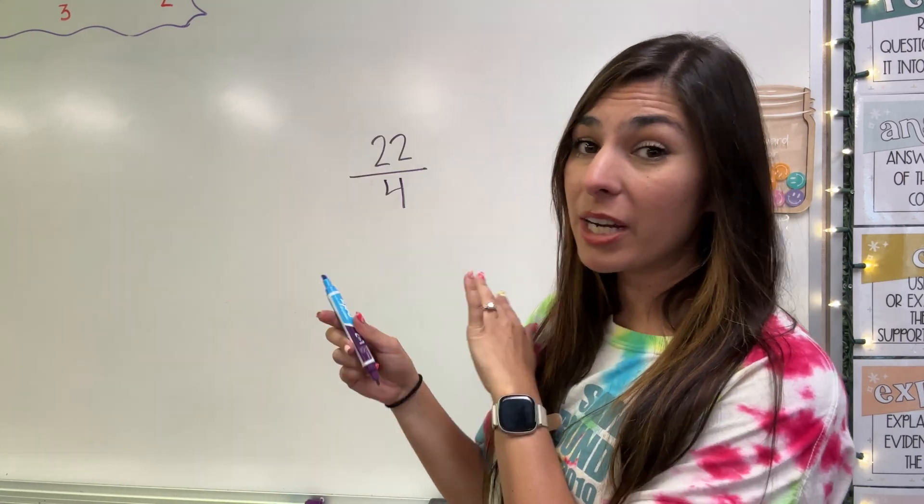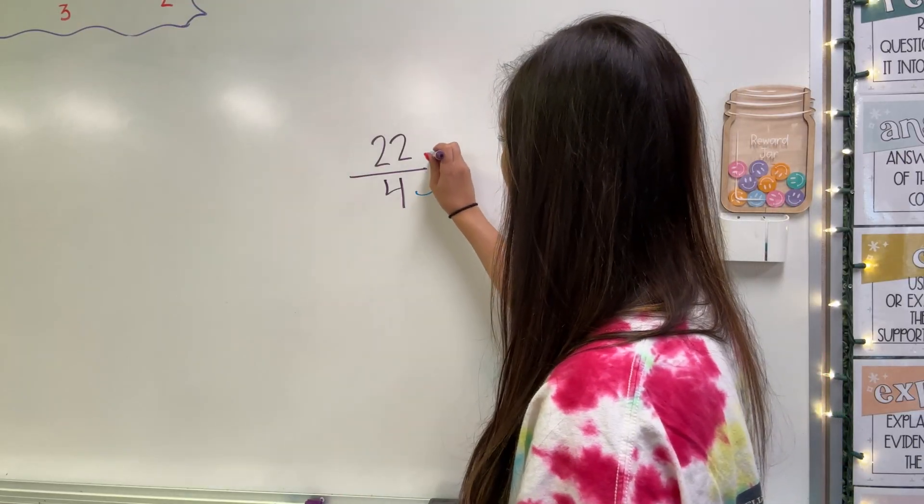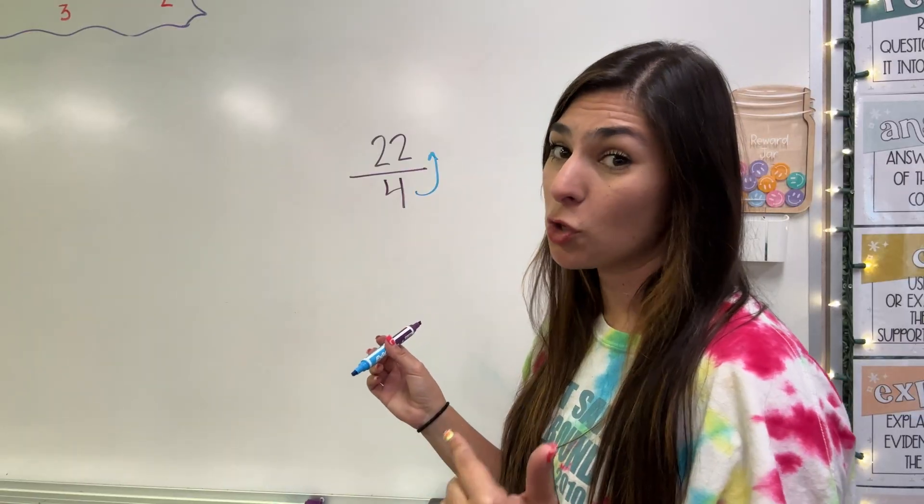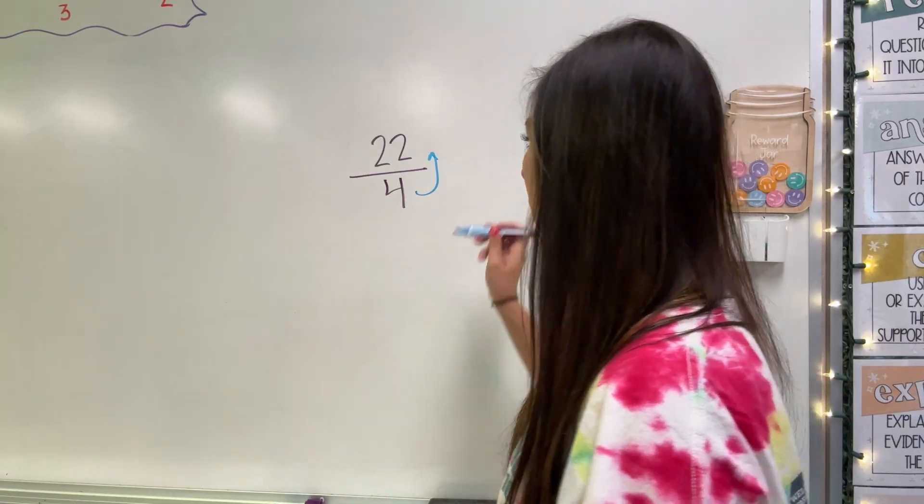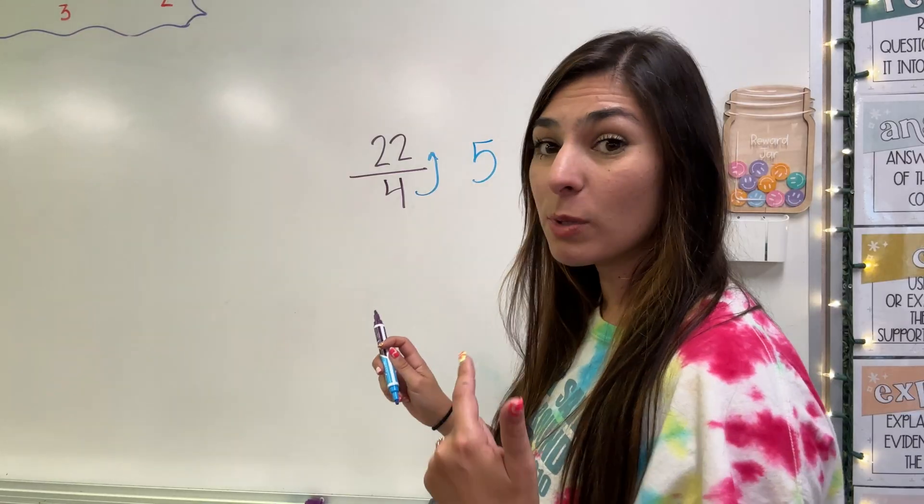My improper fraction, my numerator is bigger than my denominator. My denominator can fit inside of this 22. How many times? Well, I know that four times five is 20. I can't fit another four in there.